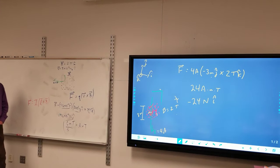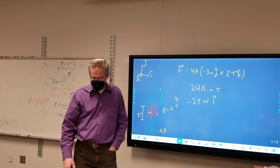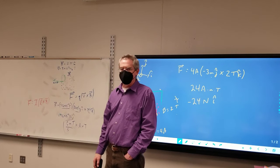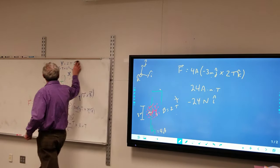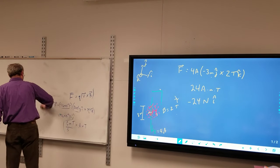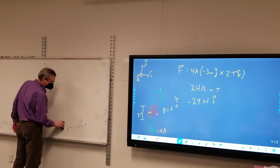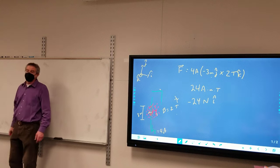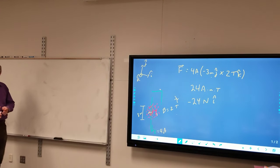All right. So we've got force on the charge, force on the current. Two equations right there. How do you create a magnetic field? Well, to create a magnetic field, all you need is a moving charge.